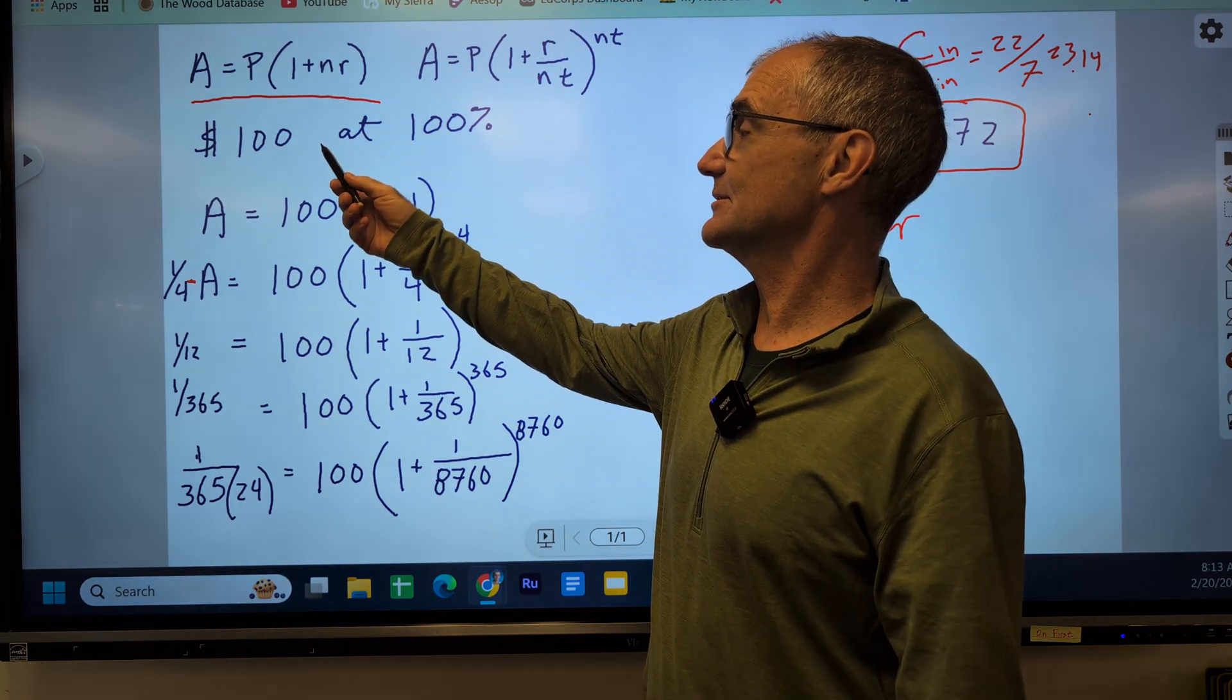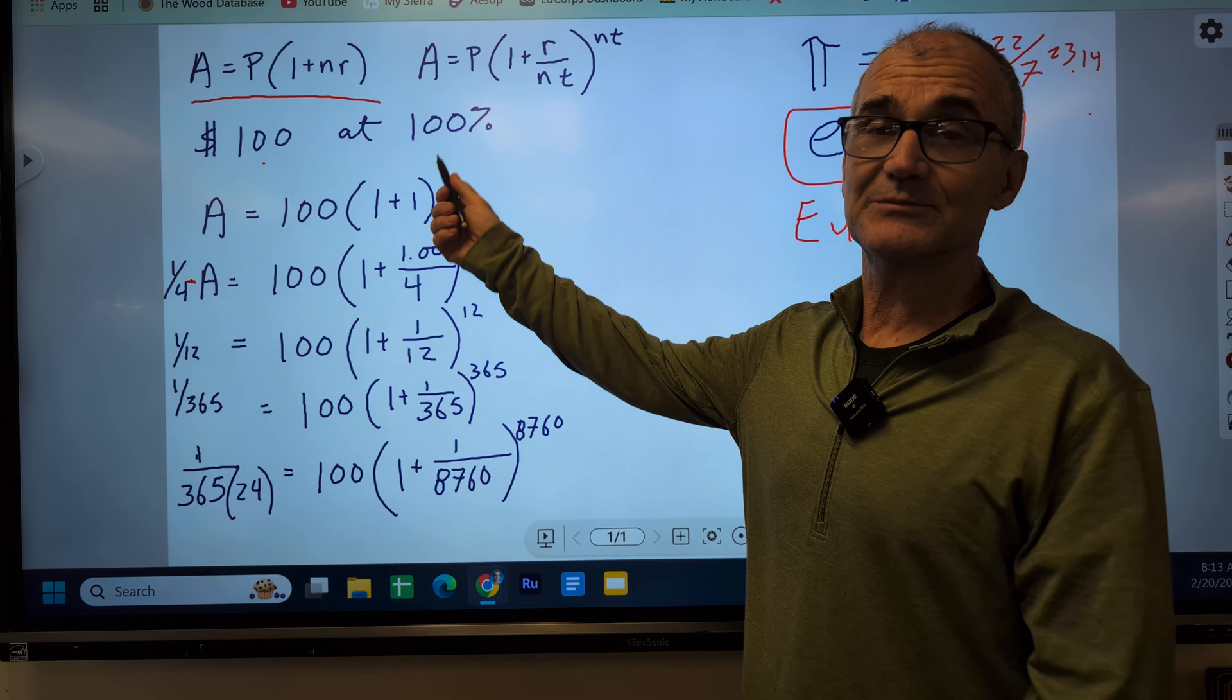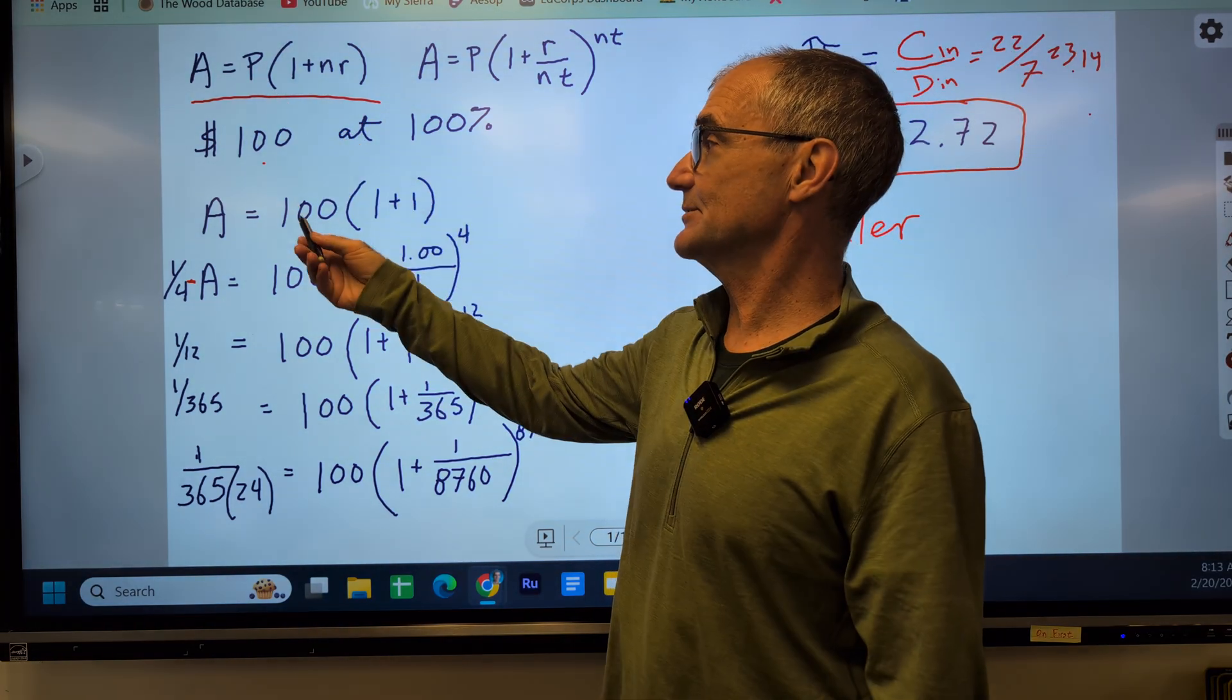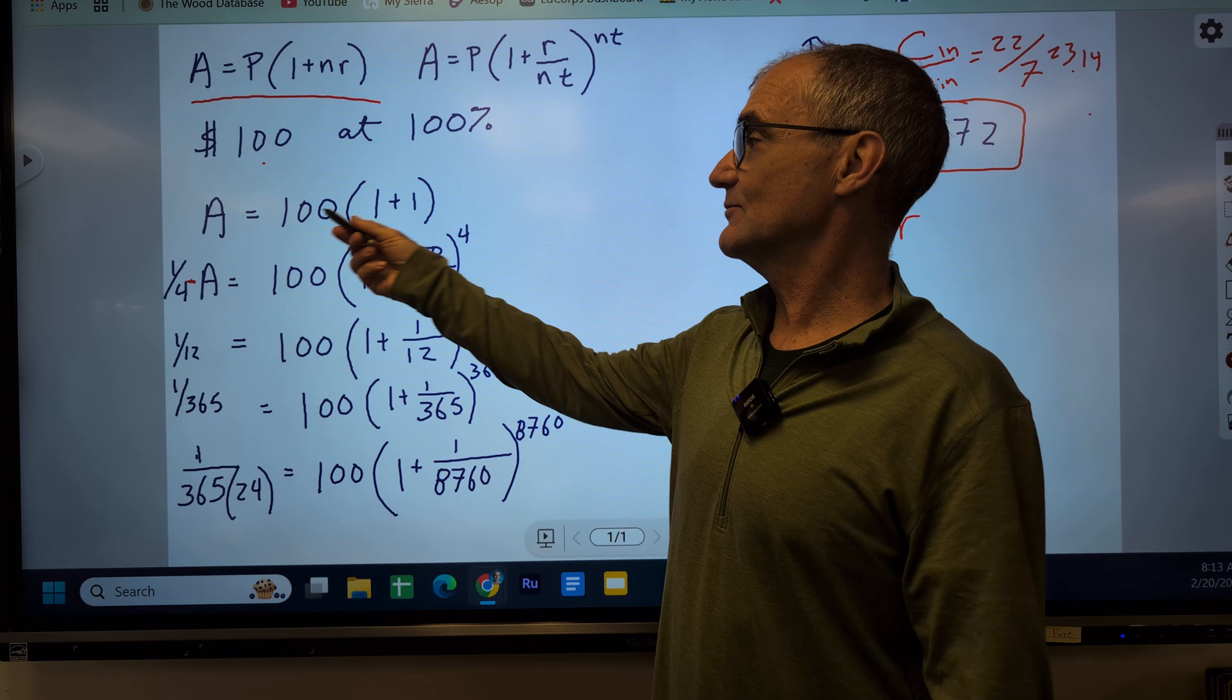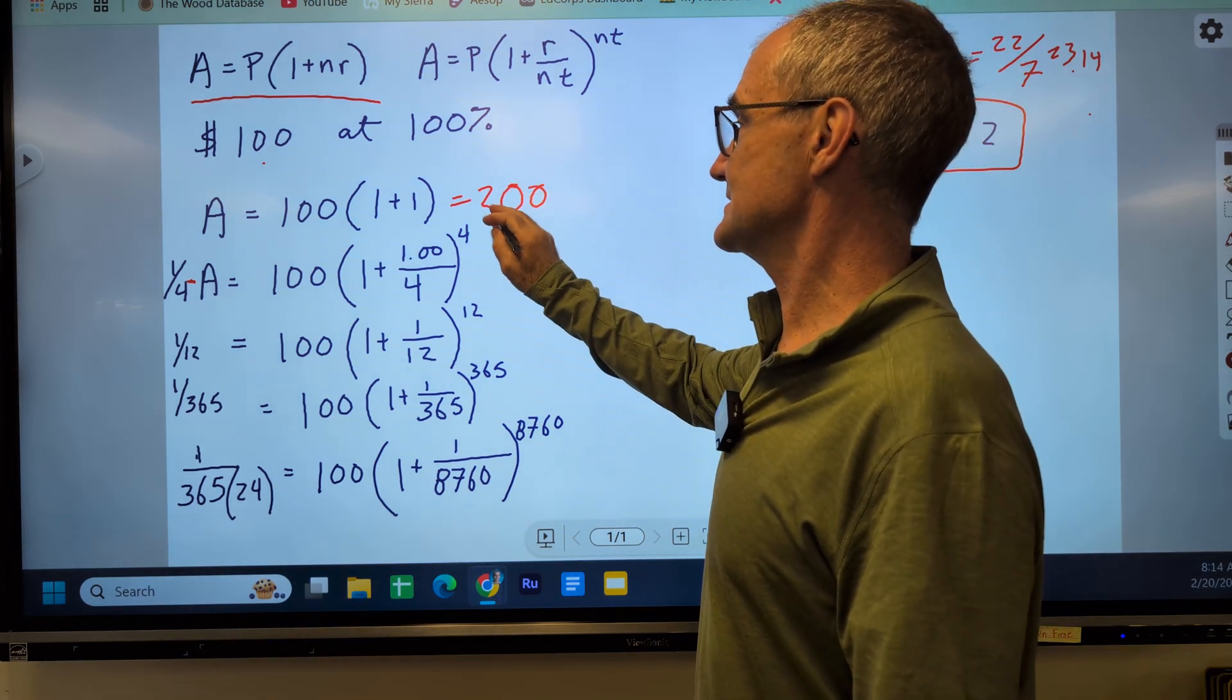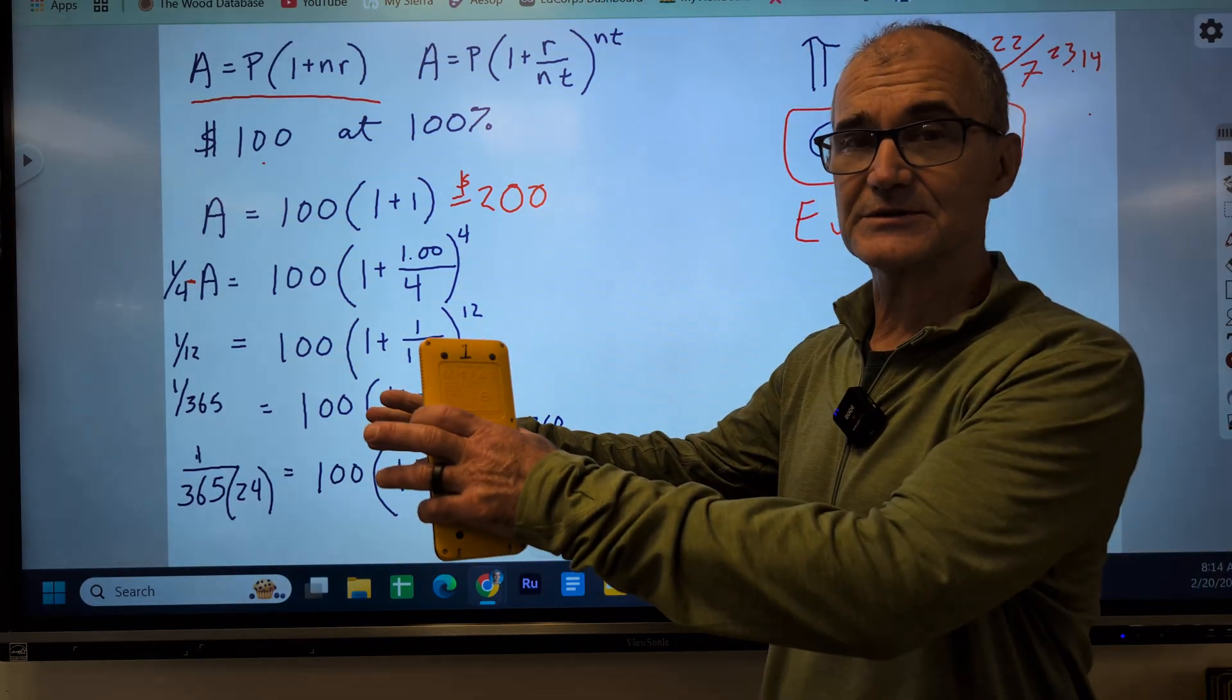How that would work with this example here is let's say I have $100 in the bank at 100% interest. I know you're never going to earn 100% interest, but this is a good number to see where Euler's number comes from. So using my equation for simple interest, I'm putting $100 in the bank. My interest rate is 100% or 1.00. So I have 100 times 1 plus that 100%. This is 2, times 100 equals $200. And what that means is at 100% interest with simple interest, I put my money in the bank, at the end of a year I have $200. $100 in my principal, $100 in interest.